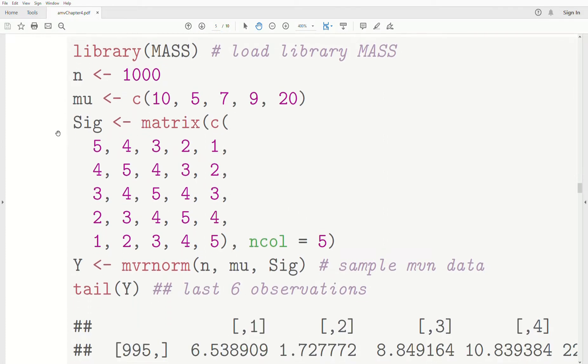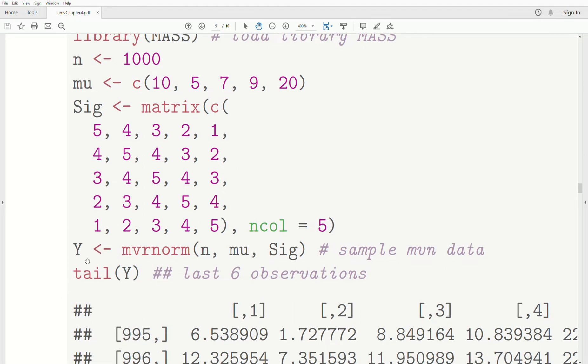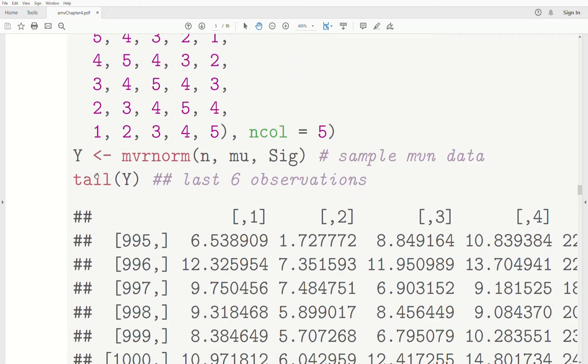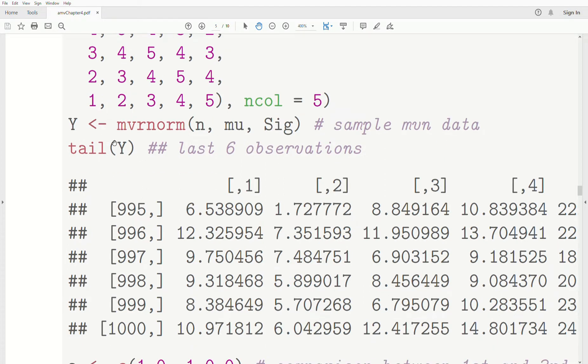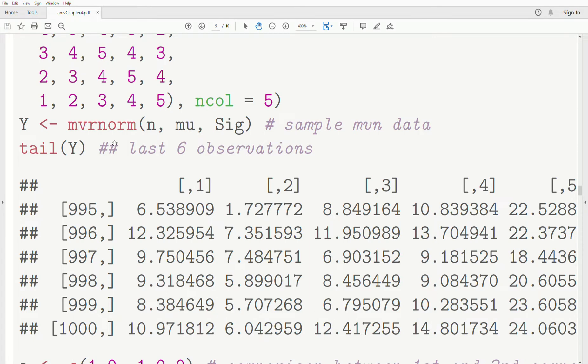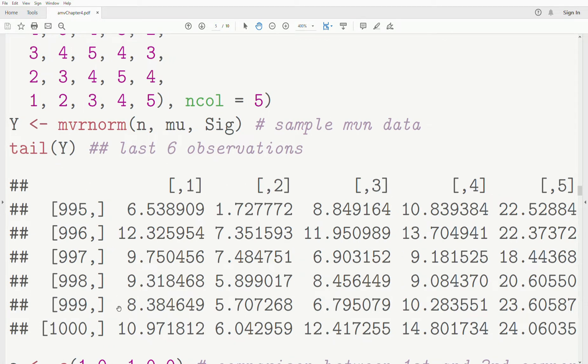We have a variance covariance matrix of this. I'm not going to say it. Five columns, right, because five random variables. The multivariate R norm is how you create a sample of multivariate data. N is the sample size, mu is the mean vector, and sigma is the covariance matrix. We store it in Y. And then in previous videos I used what's called the head function, head of Y, and it prints the first six observations. Tail prints the last six observations. So here they are.